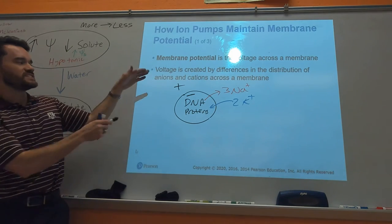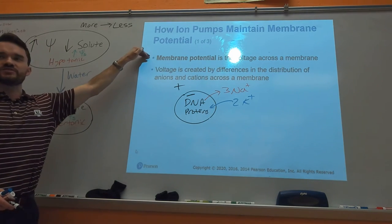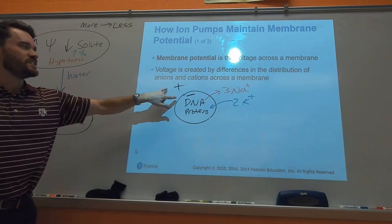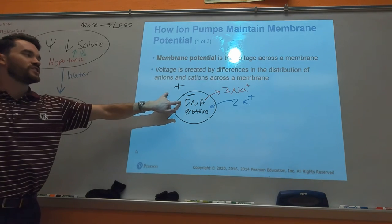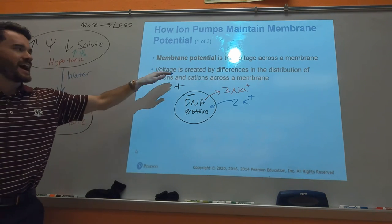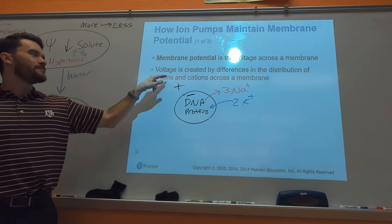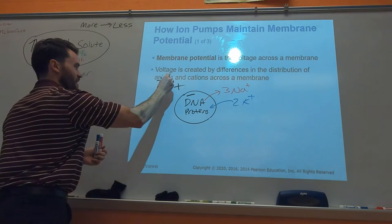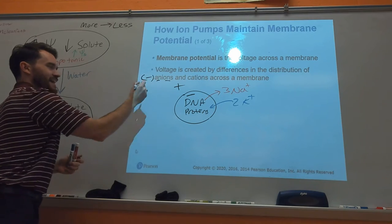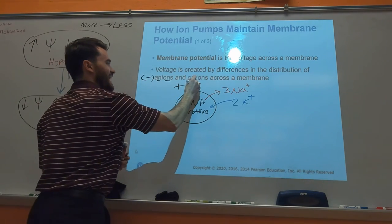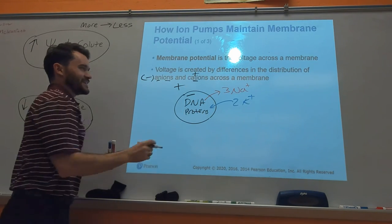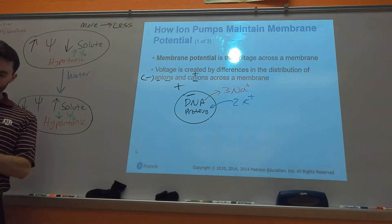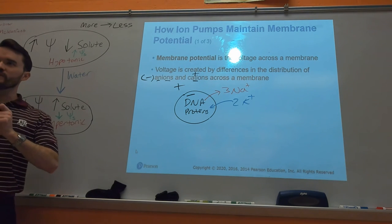And we call this difference in charge the membrane potential, where there's a difference in voltage. Voltage is referring to the amount of anions and cations across the membrane. Remember, anions, N, there's two Ns, so there's more negative. Anions are referring to negative. Cation, there's like a T there. That T looks like a positive sign.